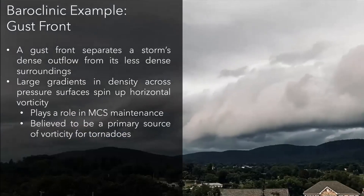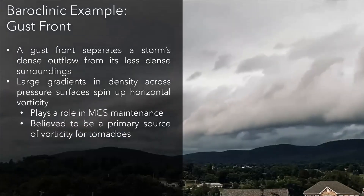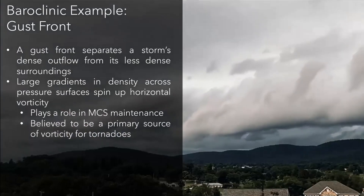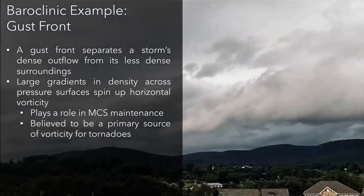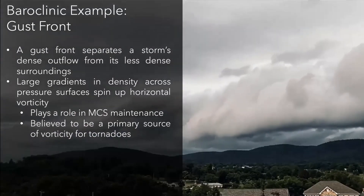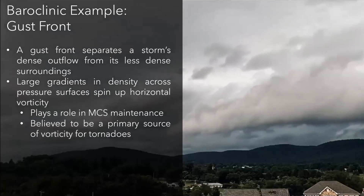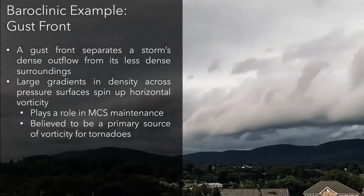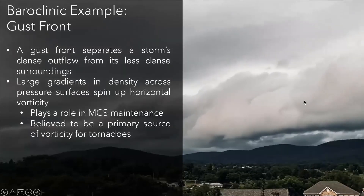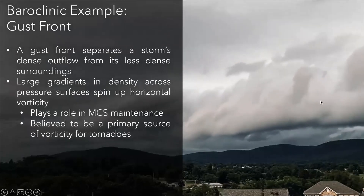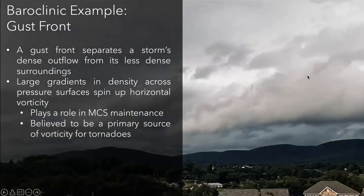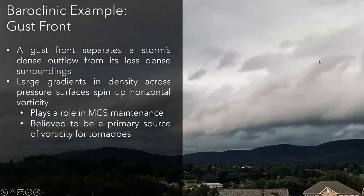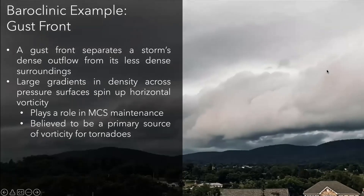Now we're going to the final term we haven't talked about yet — that's the baroclinic term. The classic example of baroclinicity in a thunderstorm is its gust front. A gust front is just a boundary — kind of like a mini cold front — that separates the dense outflow of a storm from its less dense surroundings. Those large gradients in density across the gust front like to spin up horizontal vorticity. We can see in this time-lapse on the right — this is a summer storm at my house — you can watch this vorticity spin up if you follow the cursor.